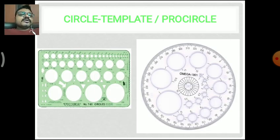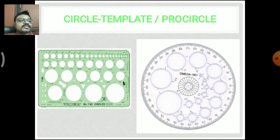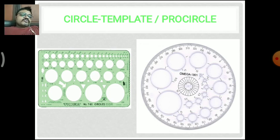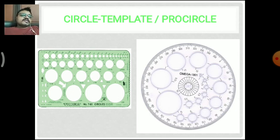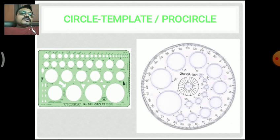Next is the circle template or pro circle. These circles are used for decoration of numbering or other elements in drawing sheets. Nowadays all students are using this pro circle mainly for decoration. Different diameter circles are available in the pro circle. The widely used and available pro circle in the market is the plastic one on the right side; the left side one was widely used in earlier days. We use this pro circle for presentation purposes — for drawing a circle outside a number such as 1, 2, 3.